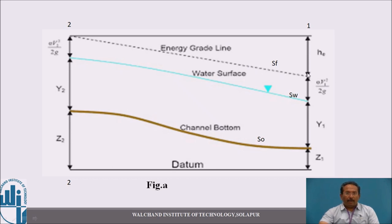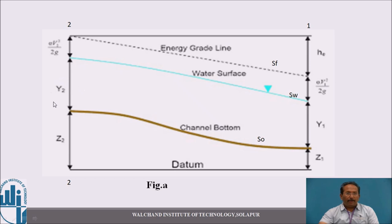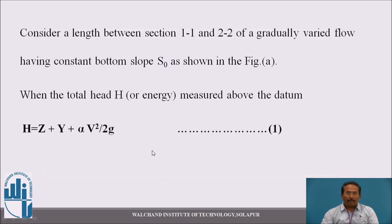In the figure, section 1 and section 2 are marked. The section where characteristics do not change is called the controlled section. Below everything is the datum line. At section 1, we have the datum head, pressure head, and velocity head (kinetic head). Similarly at section 2, we have datum head, pressure head, and kinetic head, denoted as v²/2g.